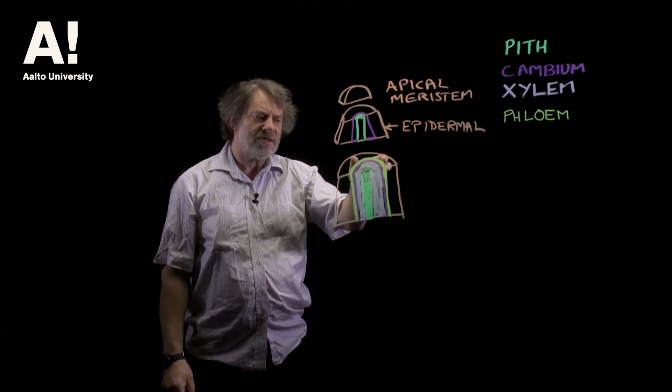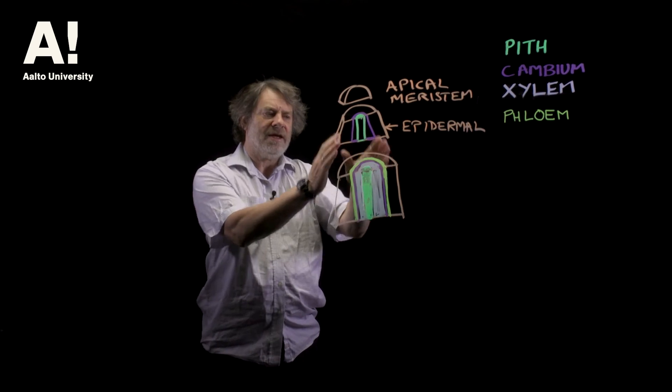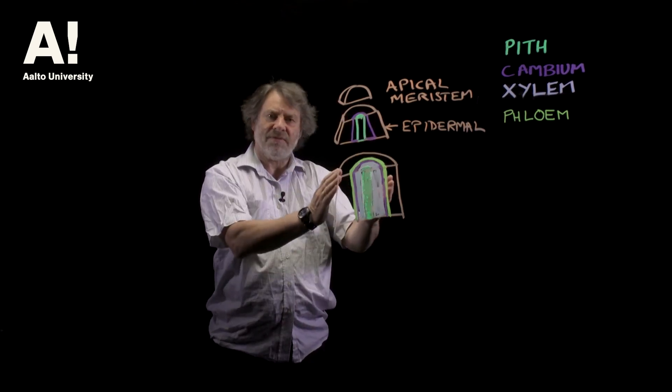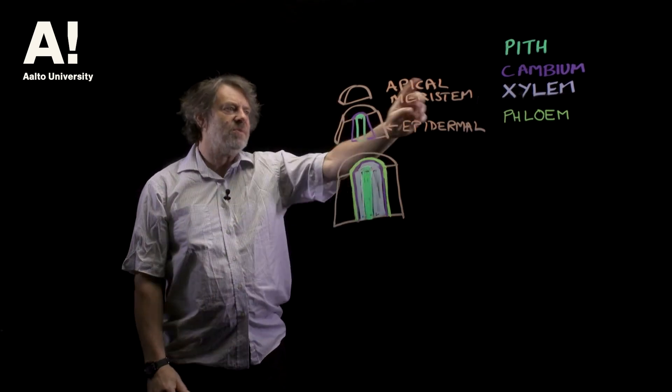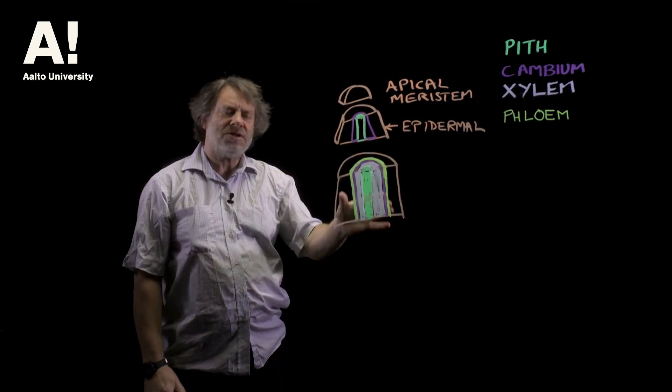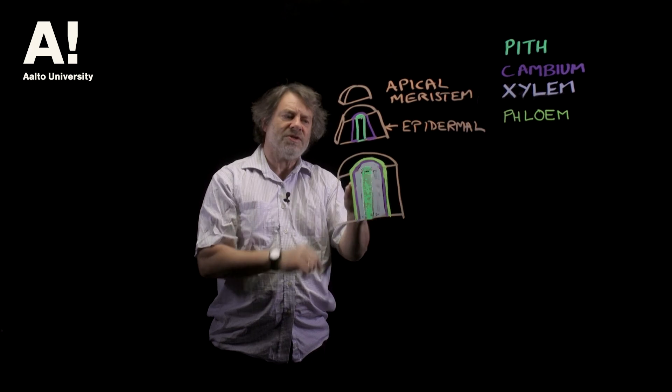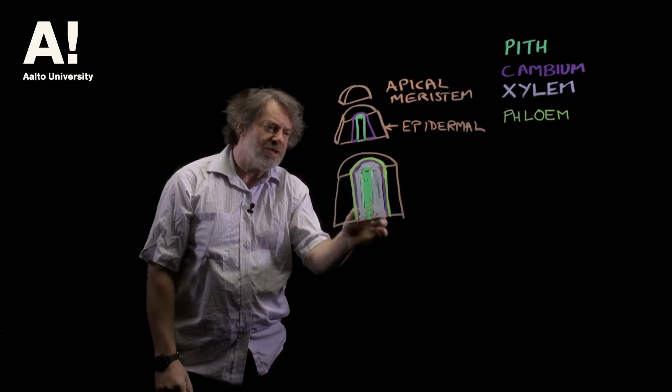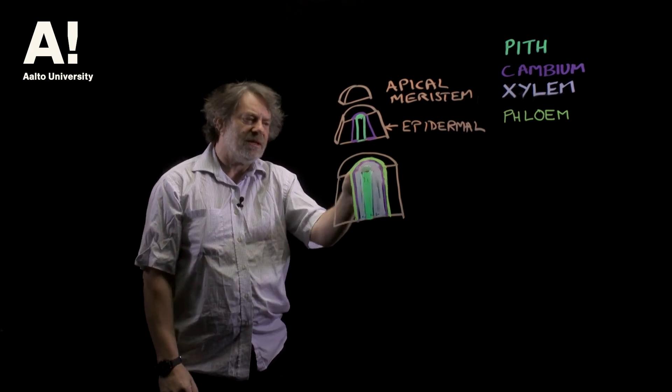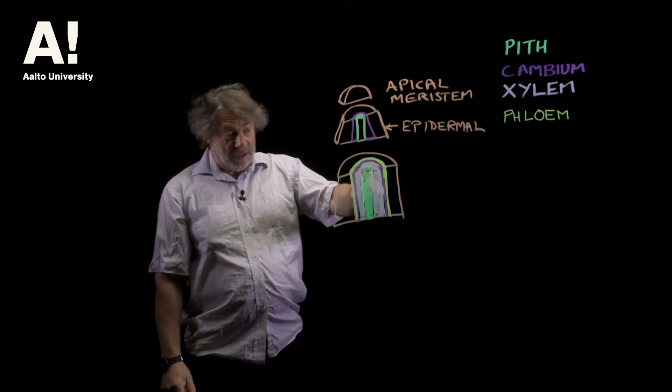Outside of the cambial layer we have this phloem layer, and then in this part of the meristem we have the epidermal layer which is just there to protect the cells. But this is at the very tip, it isn't the tree itself. So it's just this formation of xylem and in the middle we'll see the pith.